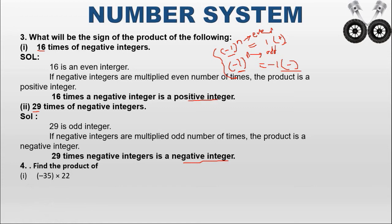Fourth question — find the product of minus 35 into 22. We compute 35 into 22, which equals 770. One integer is negative and the other is positive — different signs — so the answer is minus 770.